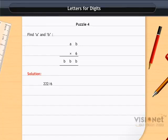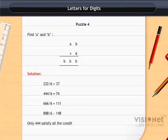222÷6=37. 444÷6=74. 666÷6=111. 888÷6=148. Only 444 satisfies all the conditions.